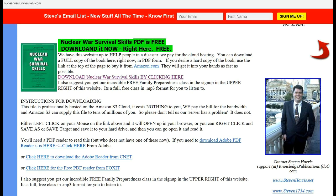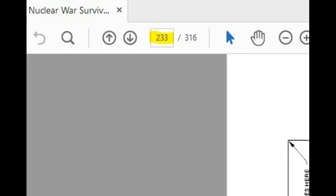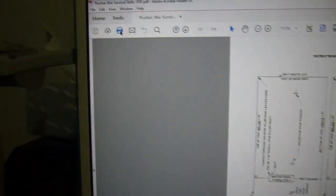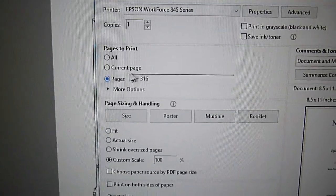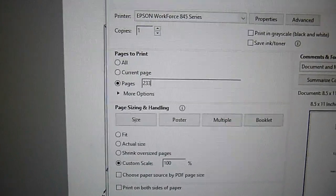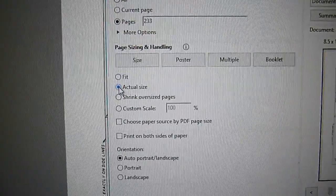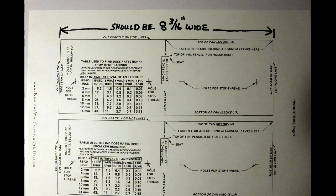Once you get to the website NuclearWarSurvivalSkills.com, download the file, open up the file, then go to page 233. Select the printer icon. Then in the pages box, type in 233. Make sure the actual size box is selected. Then print out the page.